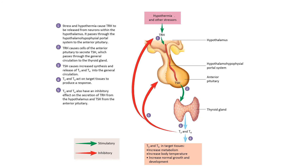Hypothermia or low body temperature, and other stressors like low blood glucose or exercise, are going to cause the hypothalamus to secrete thyrotropin-releasing hormone or TRH. TRH travels through the hypothalamic-pituitary portal system and affects the anterior pituitary, causing it to secrete thyroid stimulating hormone. Thyroid stimulating hormone in turn reaches the thyroid gland and stimulates it to secrete T3 and T4.